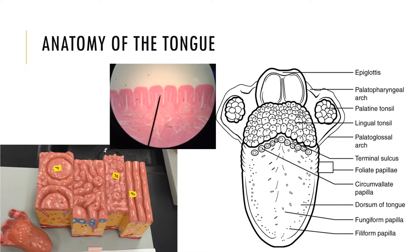Many of the papillae contain taste receptors and specialized epithelial cells in sensory structures called taste buds. Although we have more than 10,000 taste buds when we are young, an adult possesses only about 5,000 taste buds, and by age 50, less than one-third of the taste buds still exist.